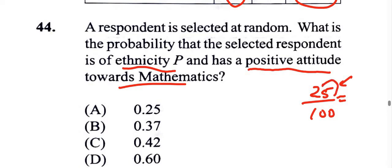If we're dividing by 100, we're going to go to 2 places to the left. And so that's going to be 0.25, which is A.